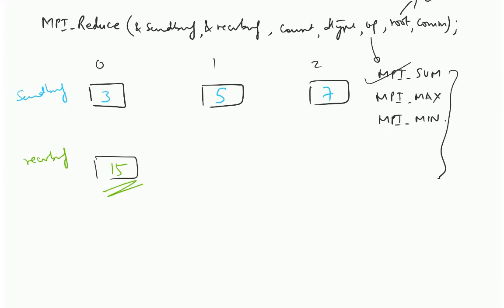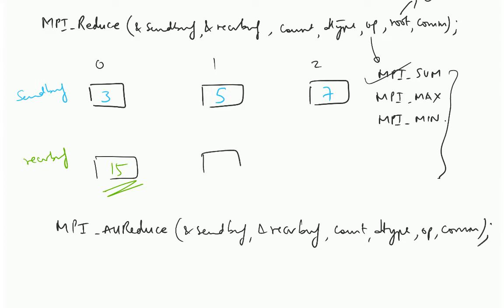Now there is another call MPI all reduce. In case of MPI all reduce, you have again send buff. It is similar to reduce except that there is no root. What is going to happen? Now you are going to have receive buffers on all the ranks. And at the end of the day the value, the final sum will be available to all of them.